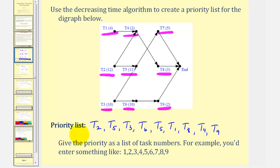Now to enter this into our homework, we'll just enter: 2, 5, 3, 6, 7, 1, 8, 4, 9. This is the Decreasing Time Algorithm, which can be used to create a priority list.